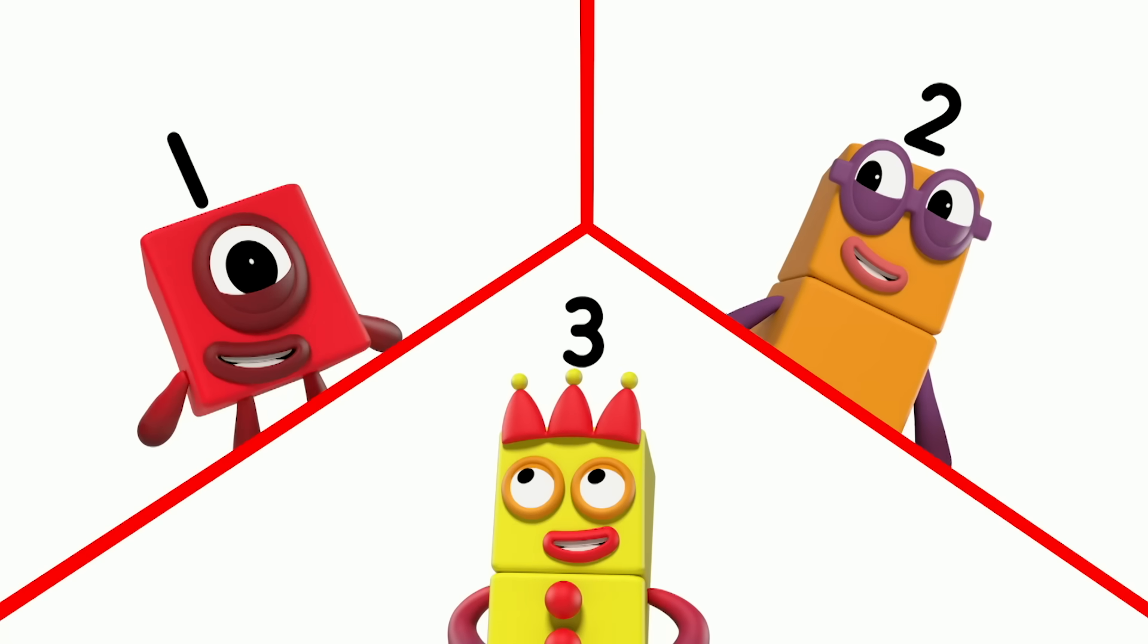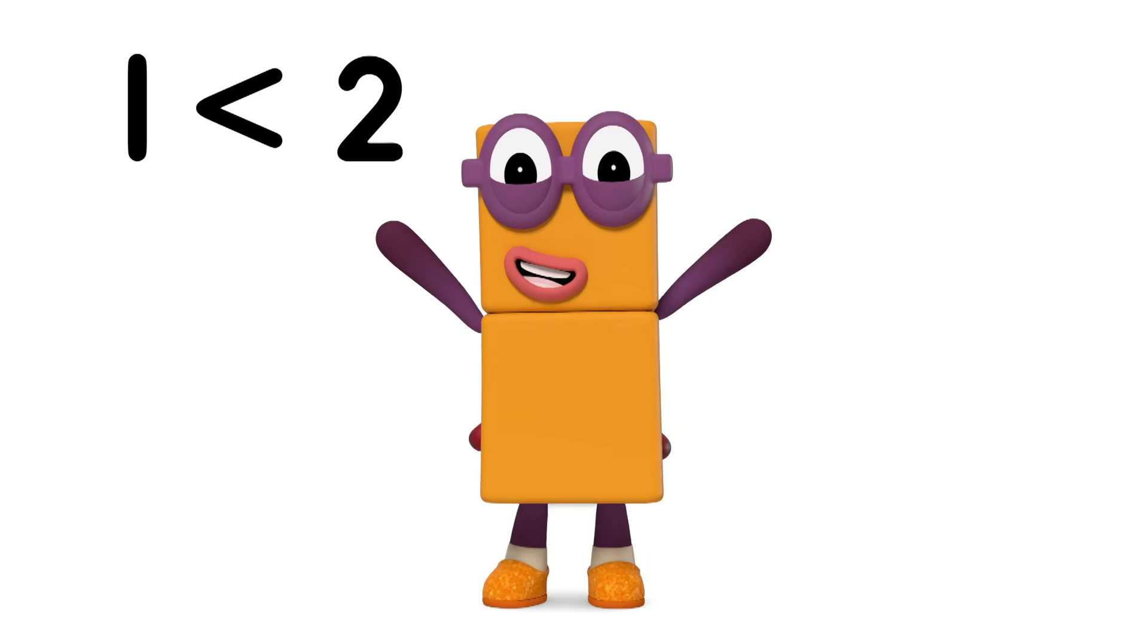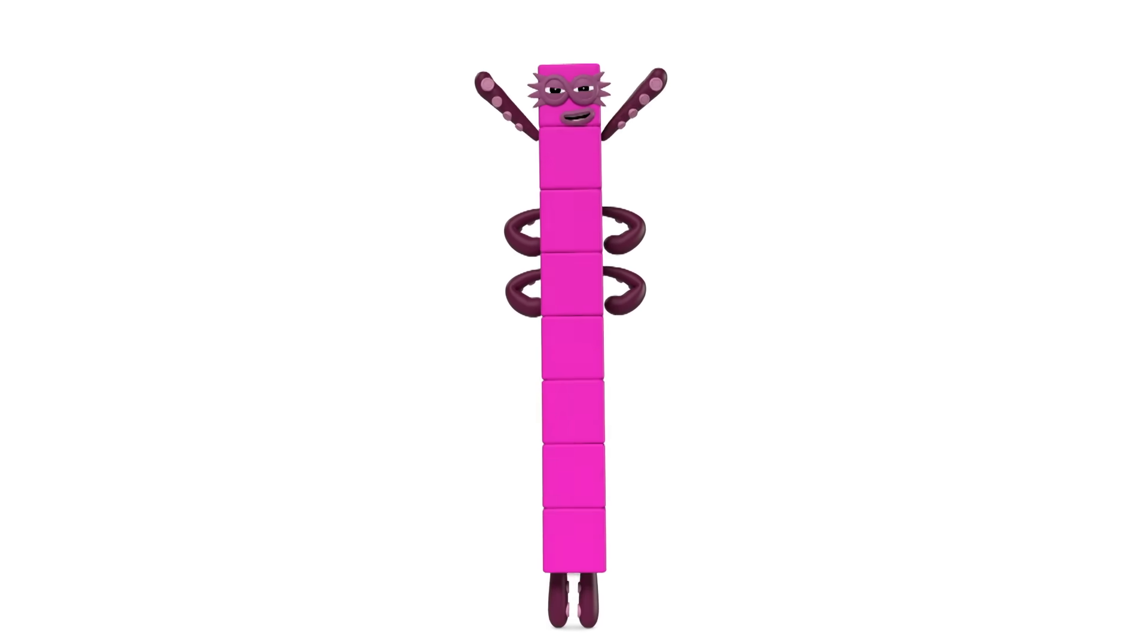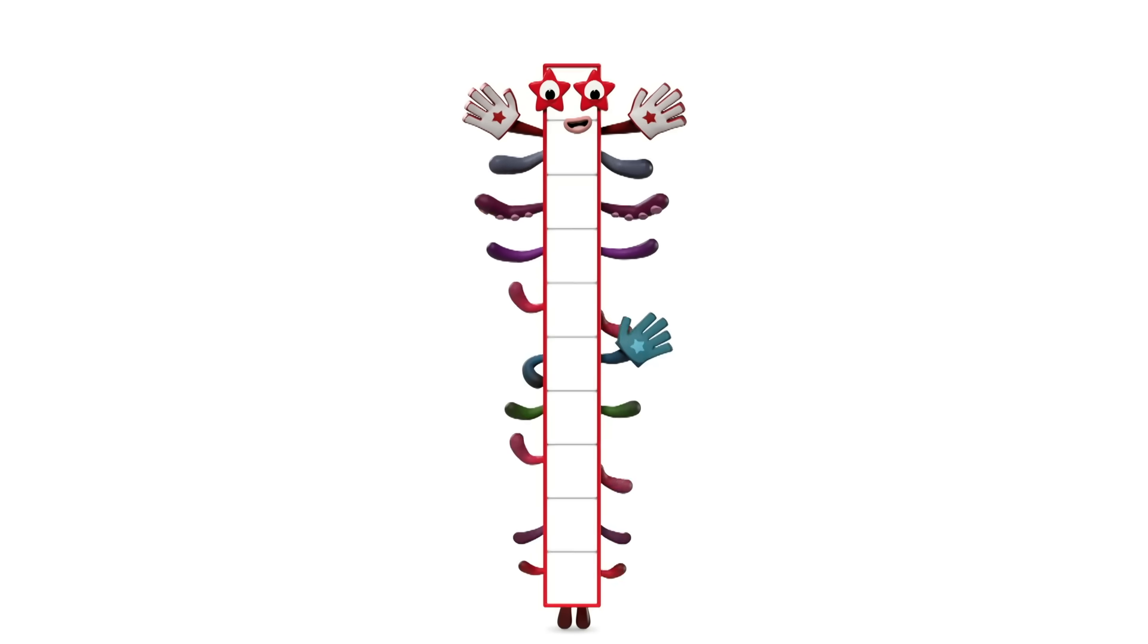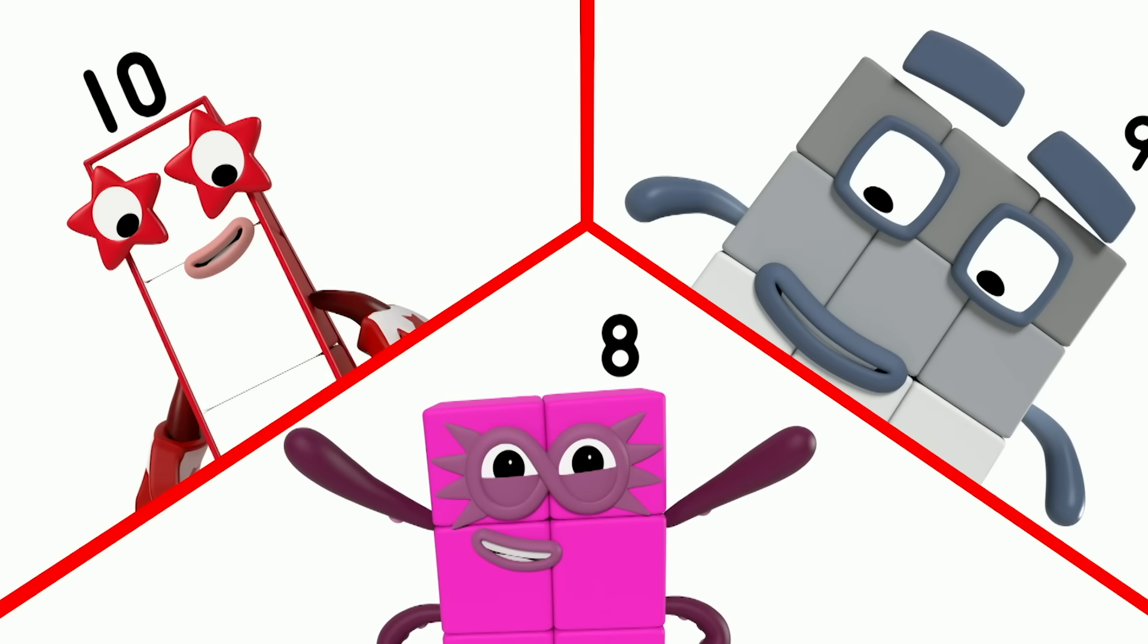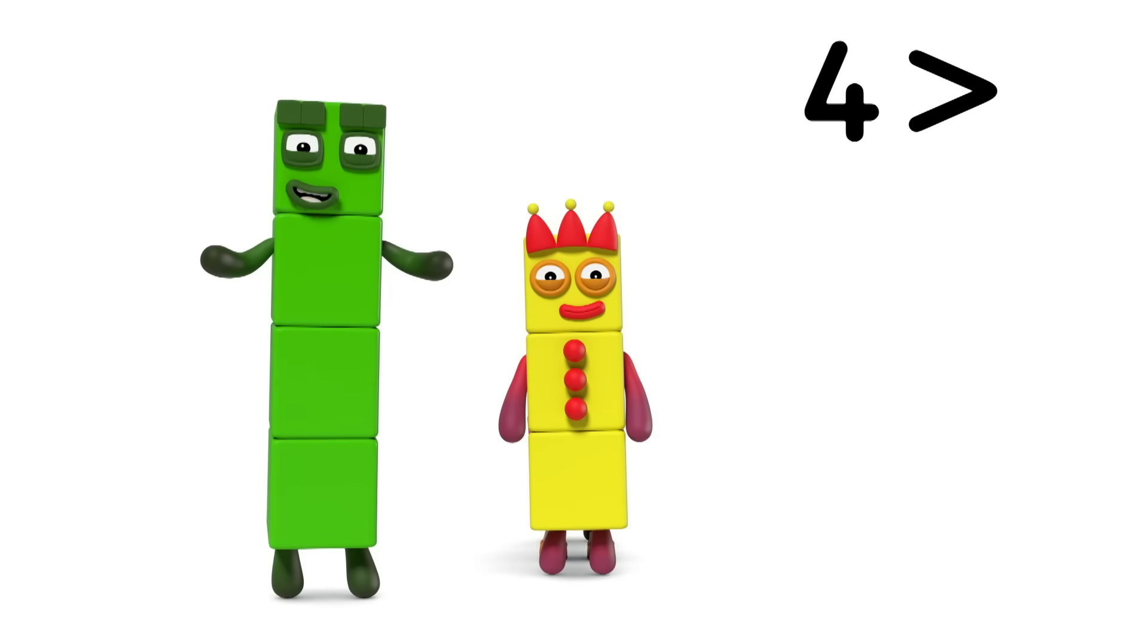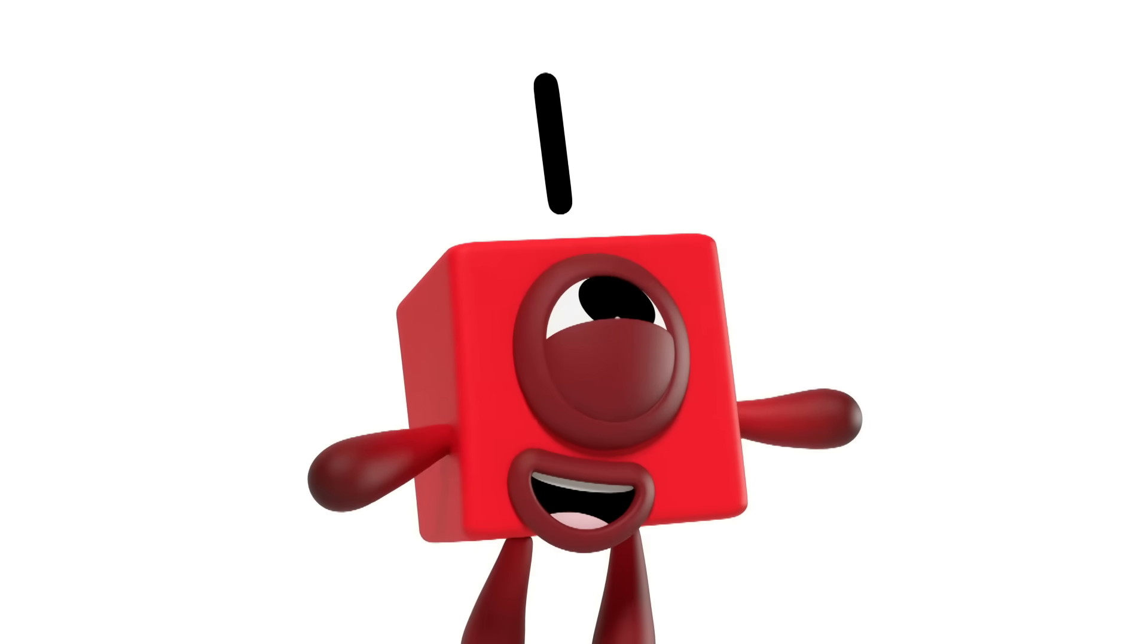One is less than two is less than three is less than four. Five is less than six is less than seven. And eight is less than nine is less than ten. And ten is greater than nine is greater than eight is greater than seven. Six is greater than five is greater than four is greater than three. And three is greater than two is greater than one.